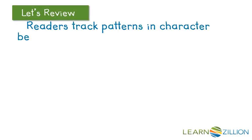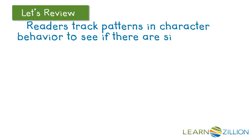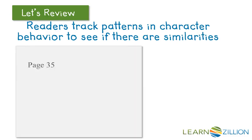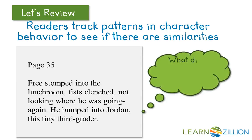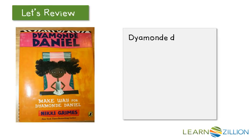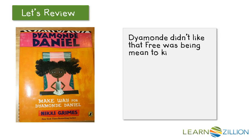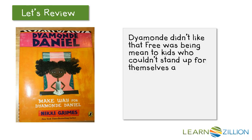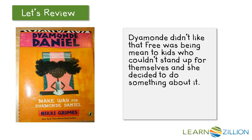Readers also track patterns in character behavior to see if there are similarities. We think: what did the character do the last time this happened? In Make Way for Diamond Daniel, we also know that Diamond didn't like it when Free was being mean to other kids. These kids couldn't stand up for themselves, and Diamond decided she wanted to do something about it.